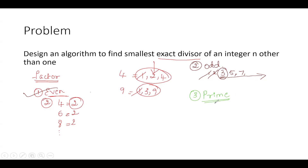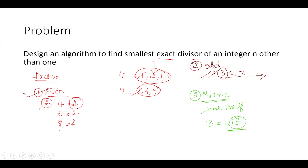The third situation is the case where the given number is a prime number. A prime number is a number which is divisible by only 1 or itself. So in this situation, since 1 is excluded, the number itself will be the smallest divisor. For example, the divisors of 13 are 1 and 13, hence 13 will be the smallest divisor. So in this case, the output is going to be the number itself. These are the three situations we need to handle.